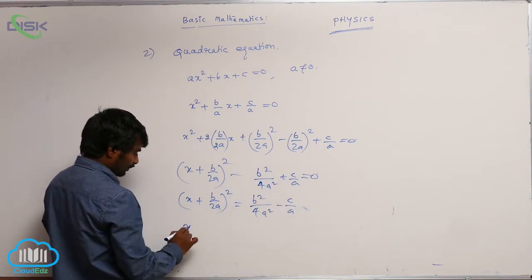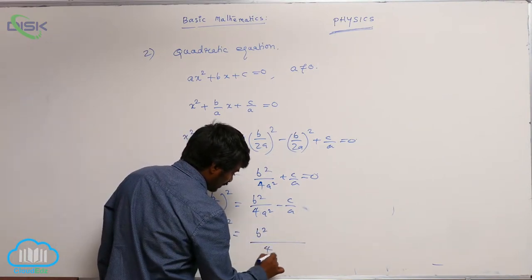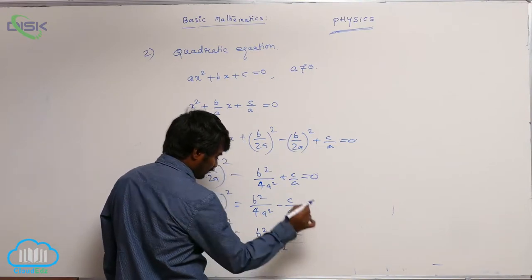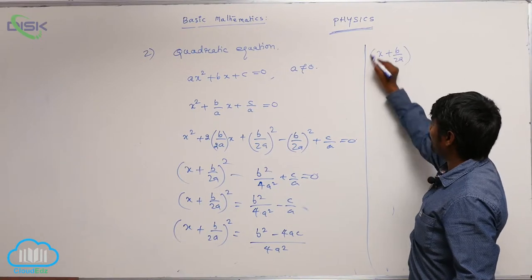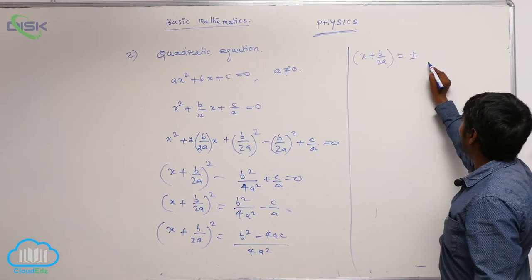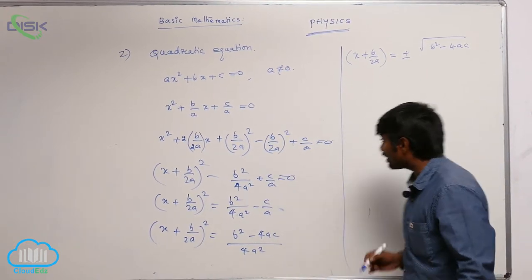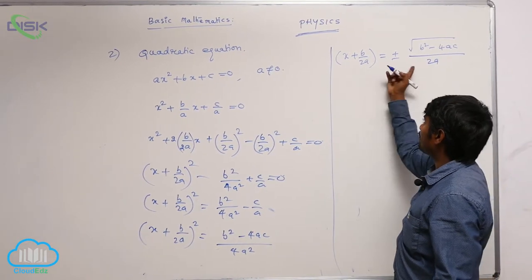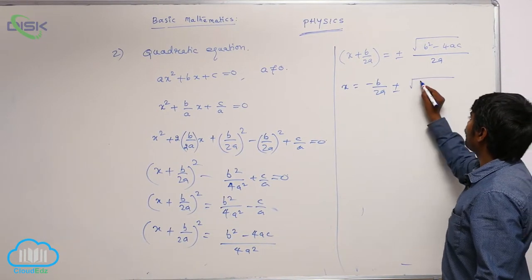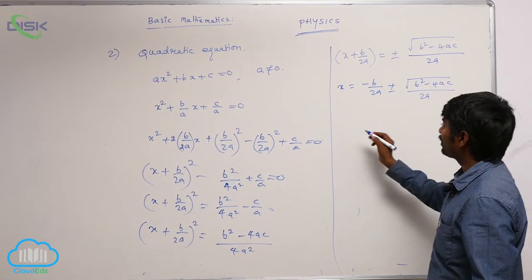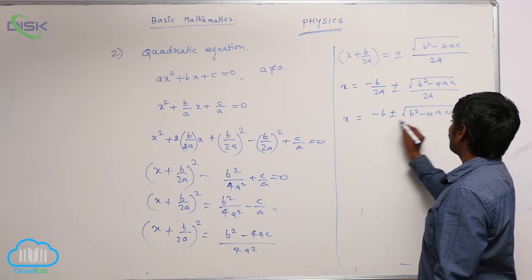Now, x plus B by 2A whole square equals B squared minus 4AC all over 4A squared. Taking square root on both sides, x plus B by 2A equals plus or minus under root of B squared minus 4AC divided by 2A. Sending the B by 2A term to the other side, x equals minus B by 2A plus or minus under root of B squared minus 4AC by 2A, which simplifies to x equals minus B plus or minus under root of B squared minus 4AC, all over 2A.